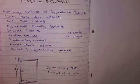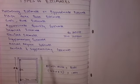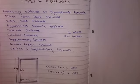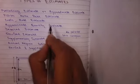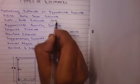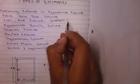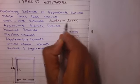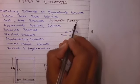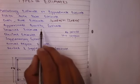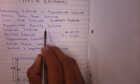Now cubic rate estimate. It is used in foundation, means L into B into H - length, breadth, and height is multiplied and then the cost is calculated.